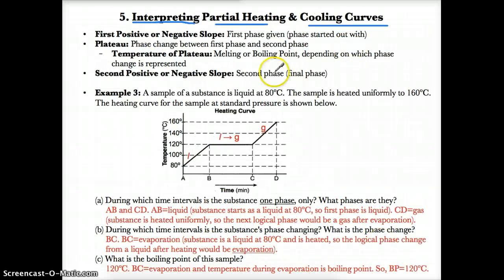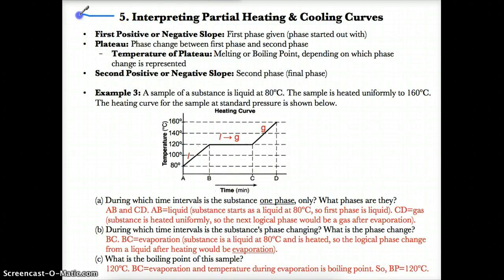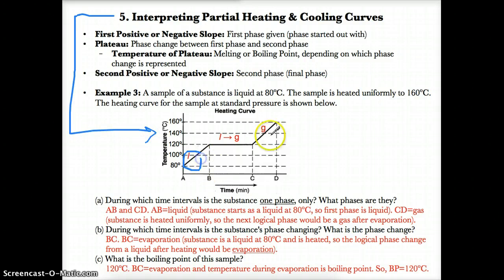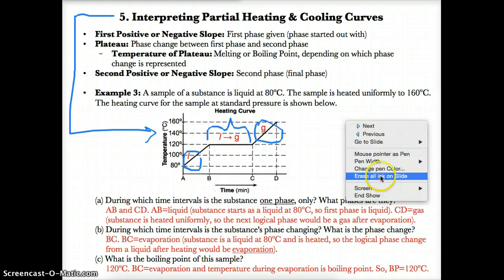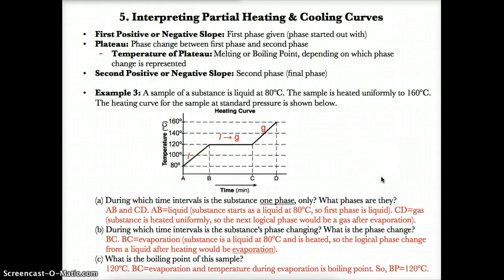With partial heating and cooling curves, you'll often only have two phases and one phase change. What you'll often encounter is something where you have only two phases and only one phase change. Let's dissect how to analyze partial heating and cooling curves.